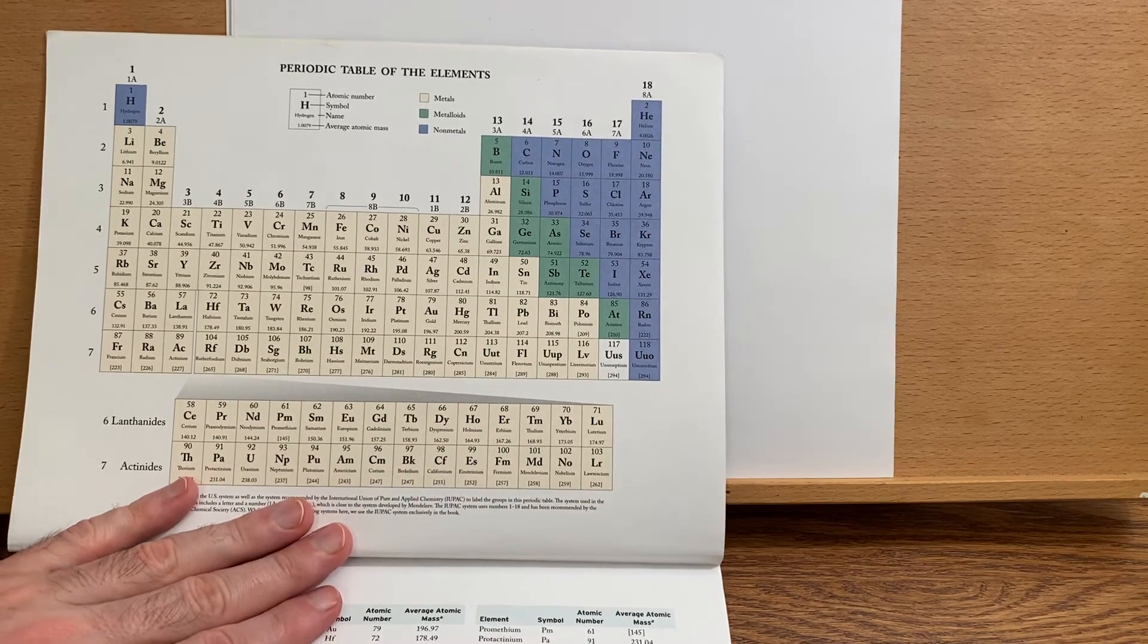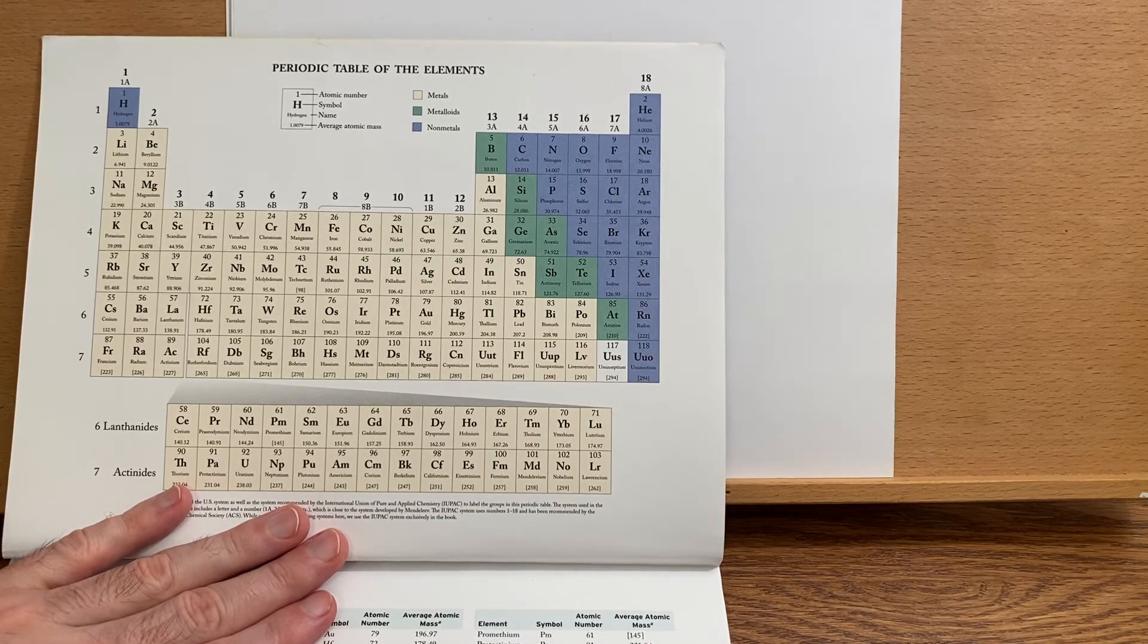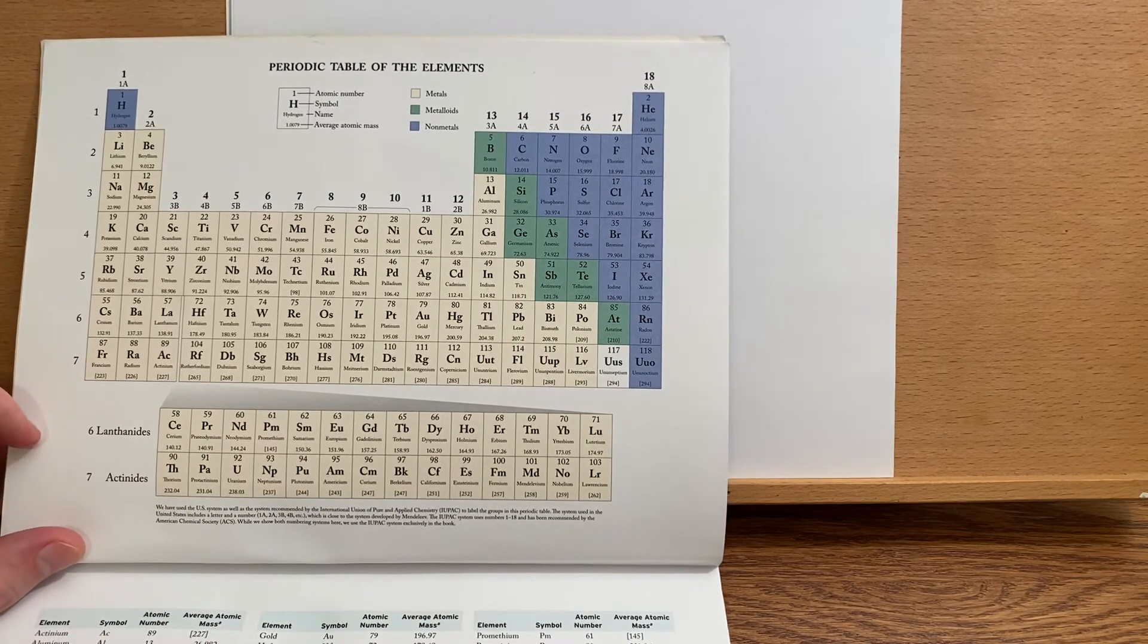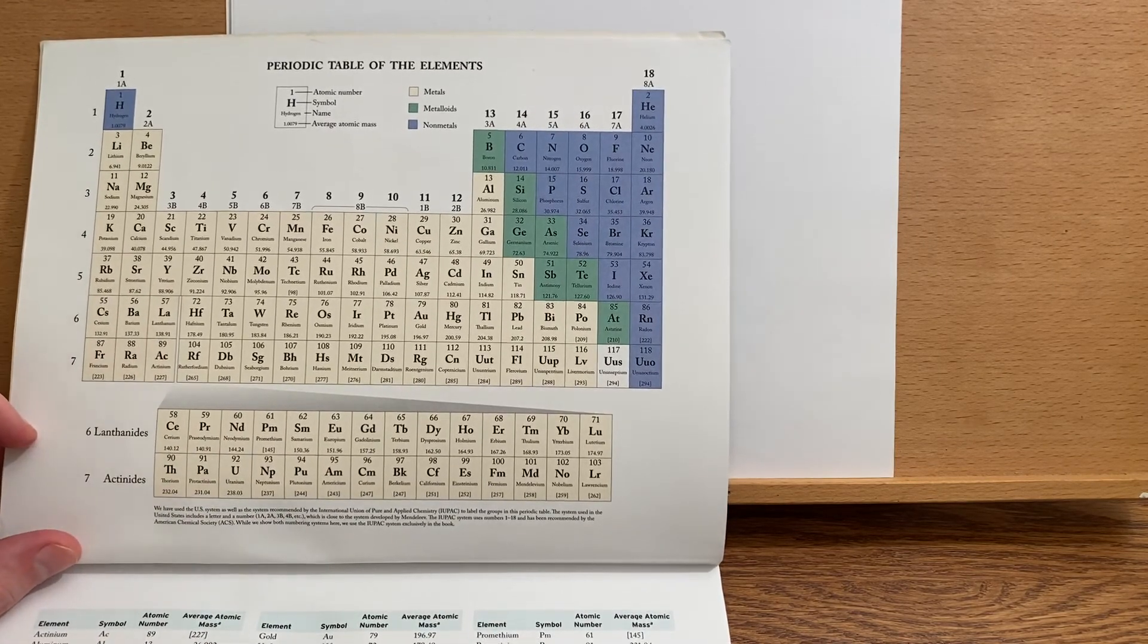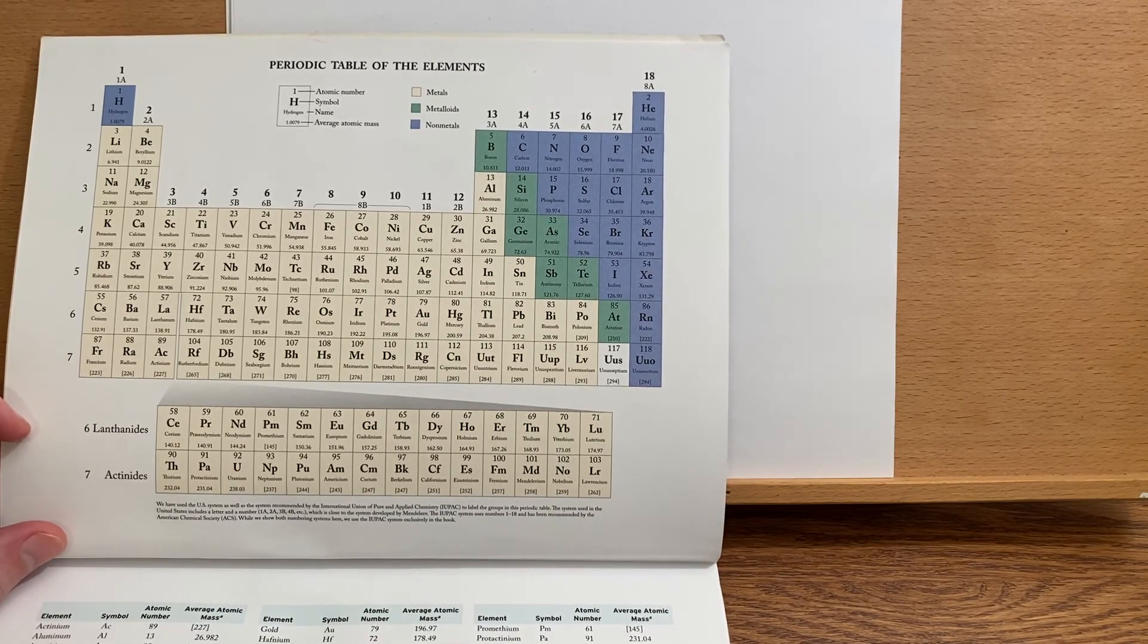Just remember that we take the first two electrons out of the 4s orbital, and then the rest come out of the d orbitals. You'll be okay. Or you could care about the exceptions and do it that way as well.